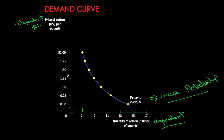If price goes up, quantity demanded decreases. If price goes down, quantity demanded increases. So the negative slope of the function is telling us about the inverse relationship between the two.